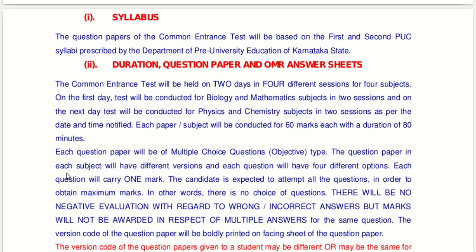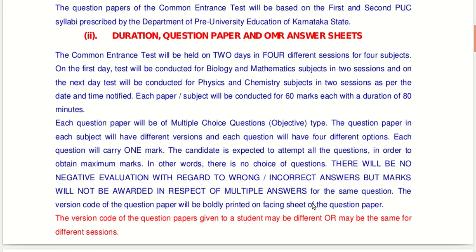I suggest most students utilize this option and try to solve all questions, marking the nearest choice you think is the answer. The version code of the question paper will be boldly printed on the facing sheet. The version code given to a student may be different or the same for different sections.